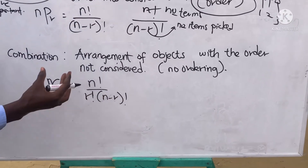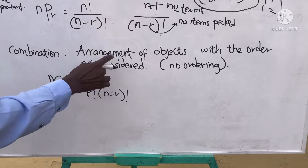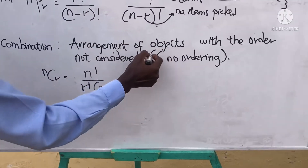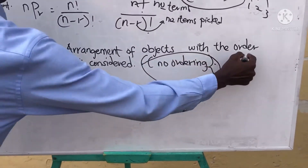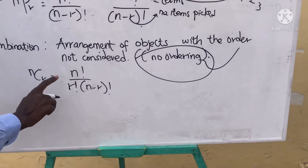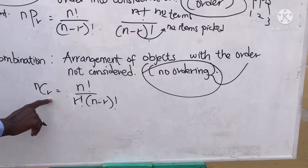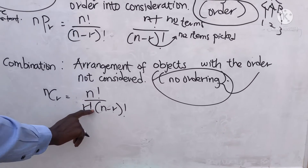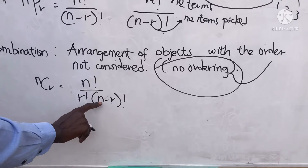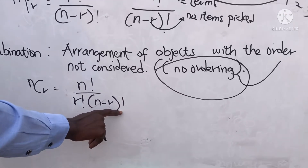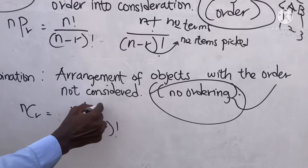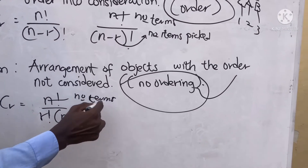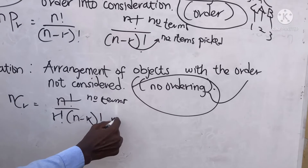Combination is the arrangement of objects with the order not considered — no ordering is involved. The formula is: n combination r equals n factorial over r factorial times n minus r factorial, where n is the number of terms and r is the number of items picked.